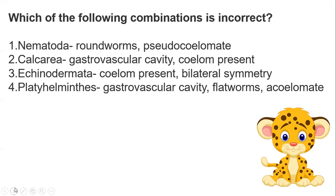Next: which combination is incorrect? Option 1 — Nematoda, roundworm, pseudocoelomate. Option 2 — Calcarea, gastrovascular cavity, coelom present. Option 3 — Echinodermata, coelom present, bilateral symmetry. Option 4 — Platyhelminthes, gastrovascular cavity, flatworms, acoelomate. The incorrect combination is option 2: Calcarea with gastrovascular cavity and coelom present.